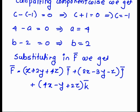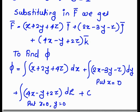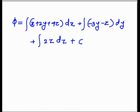Substituting a = 4, b = 2, c = −1 into the given F bar: F bar = (x + 2y + 4z) i bar + (2x − 3y − z) j bar + (4x − y + 2z) k bar. To find phi, we integrate f1 with respect to x, the terms in f2 free from x (setting x = 0 gives −3y − z) with respect to y, and terms in f3 free from x and y (setting x = y = 0 gives 2z) with respect to z, plus constant c.